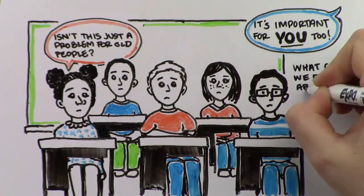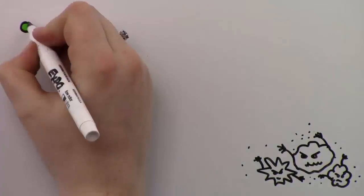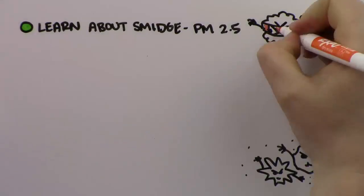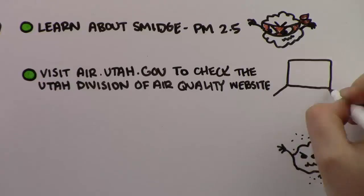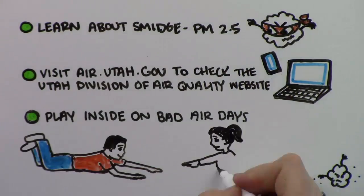What can we do about Smidge and his crew? Learn more about Smidge, better known as PM 2.5. Check the Utah Division of Air Quality website to know how many of Smidge's cronies are out today. Play indoors when the air is especially bad.